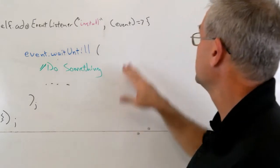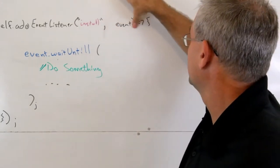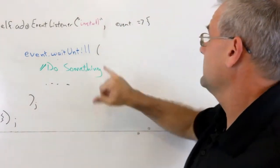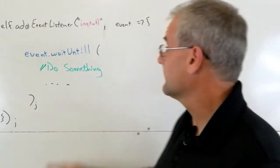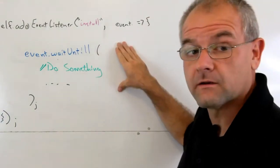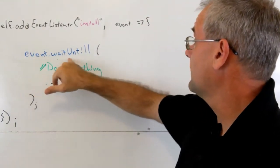And actually I got my syntax wrong here, but we'll do event into a callback function. Now inside of our handler we're going to call event.waitUntil, which is a member of this event object or the parameter that's going to be passed to our handler from the subsystem.